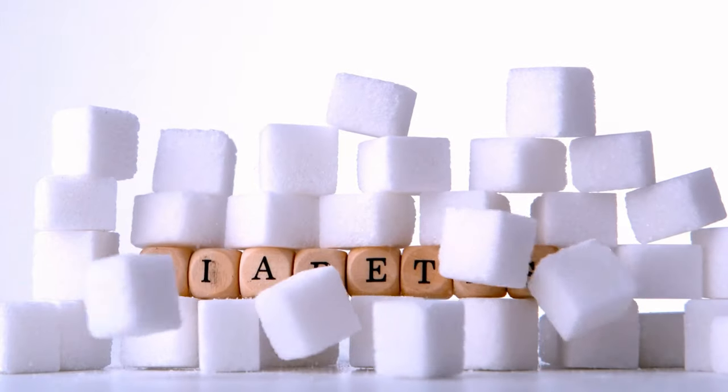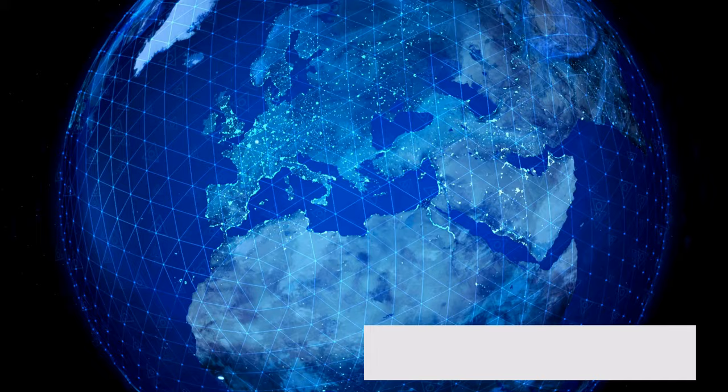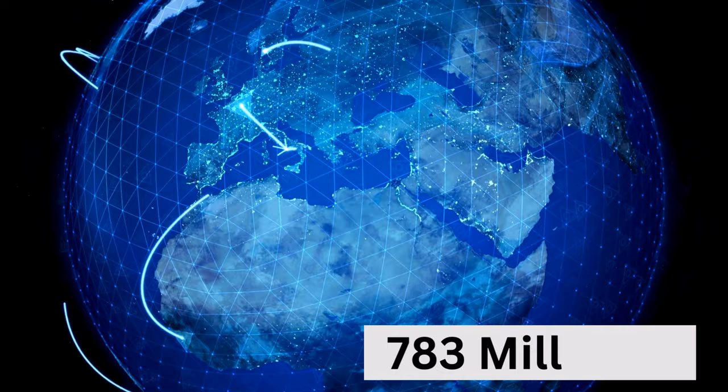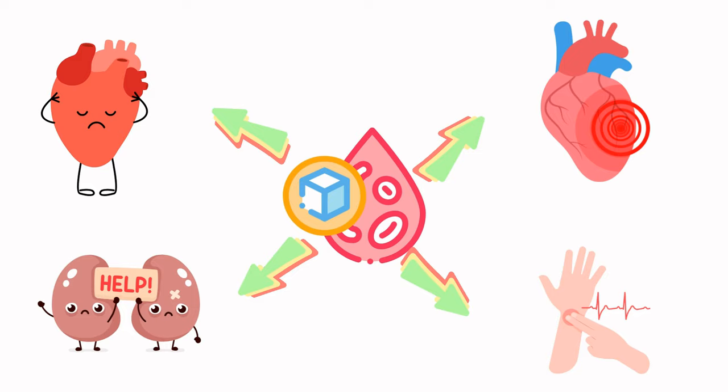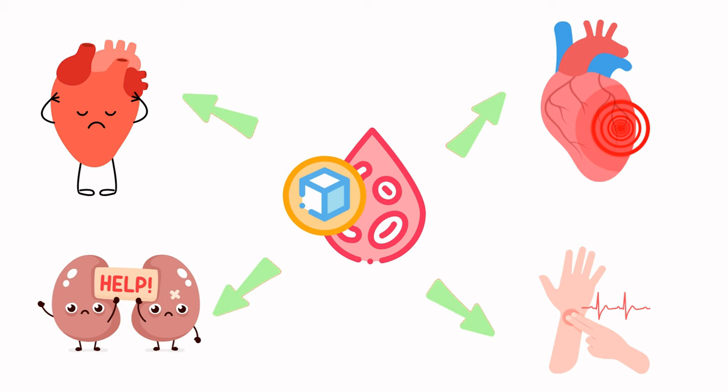One out of every eight people will have diabetes in two decades from now, meaning 783 million patients with diabetes on the planet by the year 2045. Diabetes increases the risk of coronary disease, peripheral arterial disease, heart failure, atrial fibrillation, and chronic kidney disease.